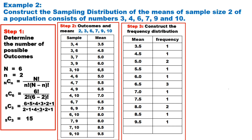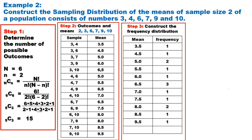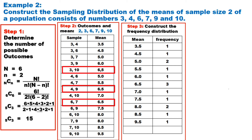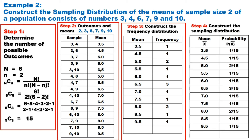Step 3: construct the frequency distribution. On the first column, write the mean from lowest to highest. On the second column, the frequency refers to the number of samples with that particular mean. For example, the mean 3.5 has a frequency of 1, meaning there is only 1 sample whose mean is 3.5. Another example: the mean 6.5 has a frequency of 3, meaning there are 3 samples whose mean is 6.5.